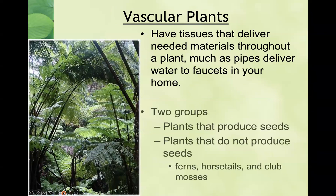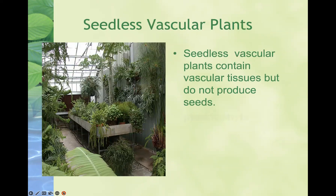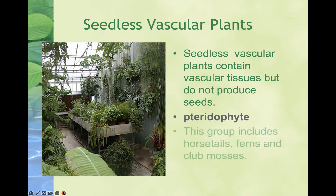Vascular plants are those that have tissues that deliver needed materials throughout the plant, much as pipes deliver water to faucets. We can further classify vascular plants as those that produce seeds and those that do not. Seedless vascular plants contain vascular tissue but don't produce seeds — these are our pteridophytes. This group includes horsetails, ferns, and club mosses. You've probably seen mosses before as a pretty common seedless vascular plant.